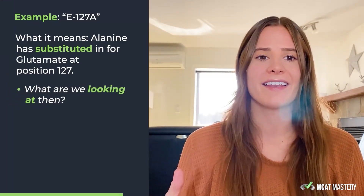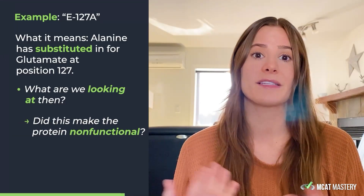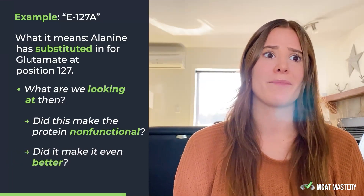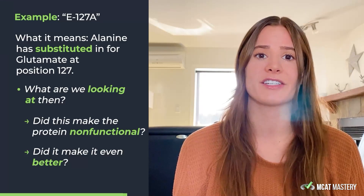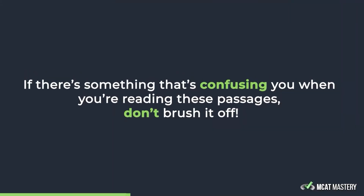Nothing else in the protein has changed. No other amino acid has been swapped unless otherwise specified. If they just say E127A, that is the only switch. So what are we looking at? Did that make the protein non-functional — meaning glutamate was really important? Did it make it even better? Maybe alanine is involved in some interaction improving protein-to-protein interactions. If something is confusing you and you notice it comes up every once in a while in that format, don't just brush it off — take the time to understand it.